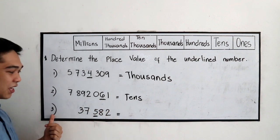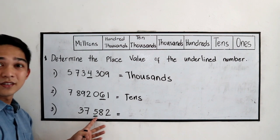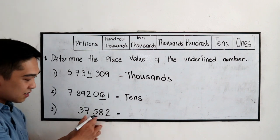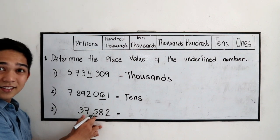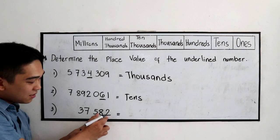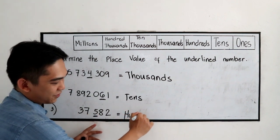Number 3. The underlined number is 5. From the right, it is located 3 units from the right. So, ones, tens, hundreds. So, hundreds.